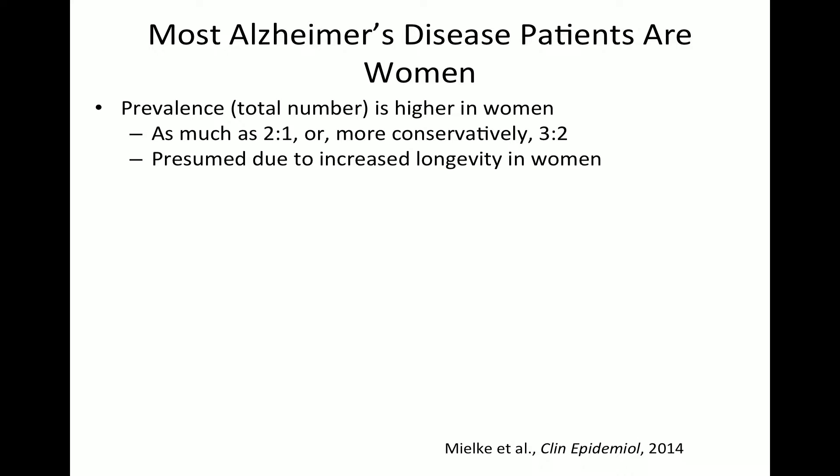This is presumed to be due mostly to the fact that women, across different societies and ancestral backgrounds, live longer than men, and age is the biggest risk factor for Alzheimer's disease. So this is pretty straightforward — there's biology here, but it's probably not Alzheimer's-specific biology, it's biology about longevity. What I'm really more interested in is whether, if you control for age and longevity, women are still at increased risk for Alzheimer's disease.